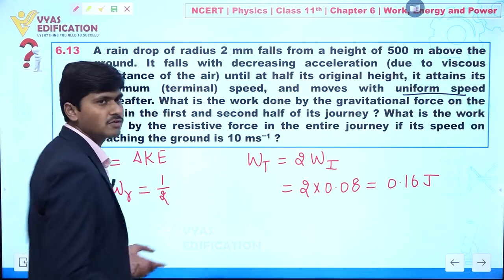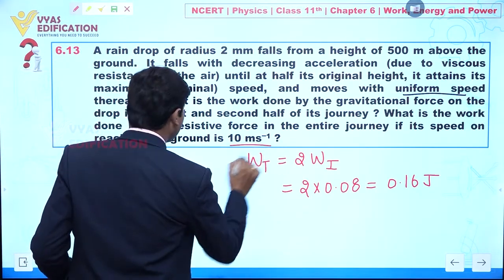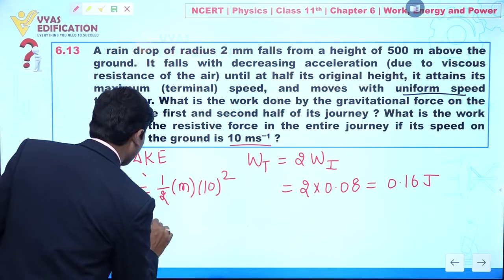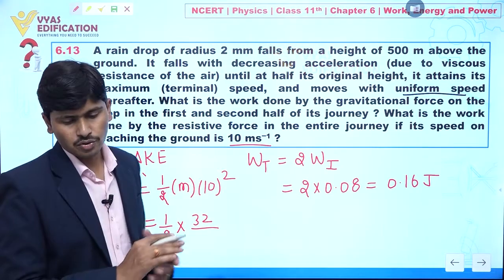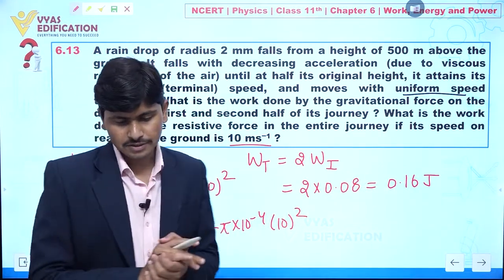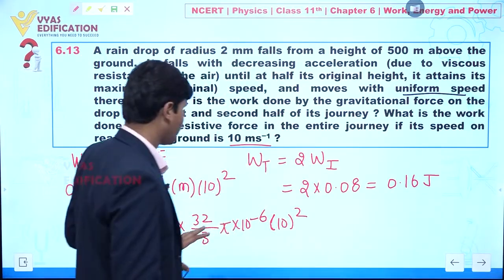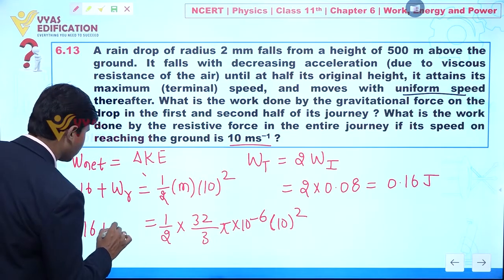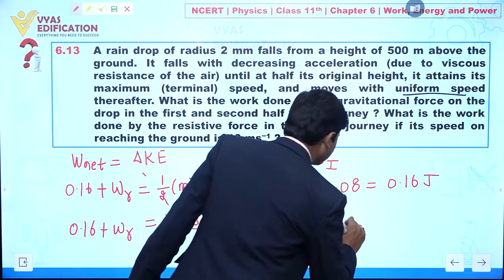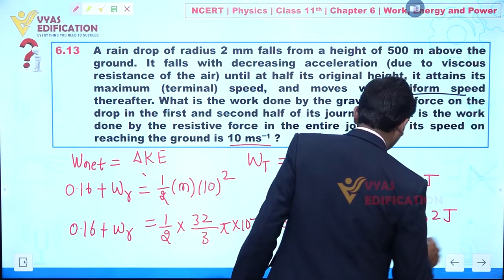The final velocity is given as 10 m/s, so v² = 100. The mass can be calculated as (32/3)π × 10⁻⁶ kg. Substituting these values: 0.16 + W_R = (1/2) × m × 100. Solving approximately, the work done by the resistive force comes out to be approximately −0.162 joules.